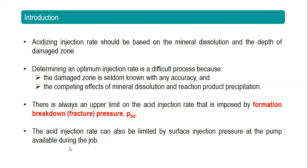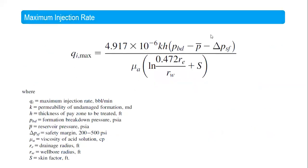Here is the formula to determine the maximum injection rate. You don't need to inject your acid above this maximum rate — you can keep a safe limit below it. The required data includes permeability and thickness of the zone to be treated.